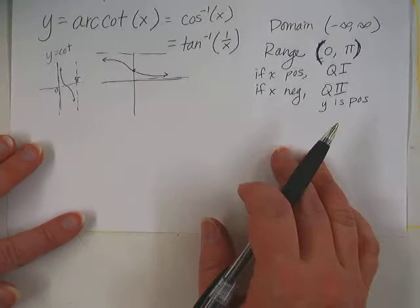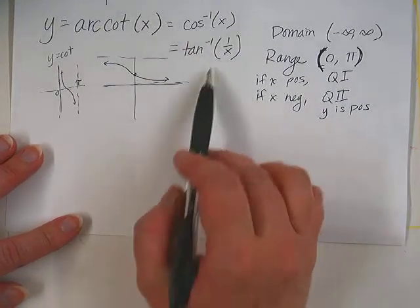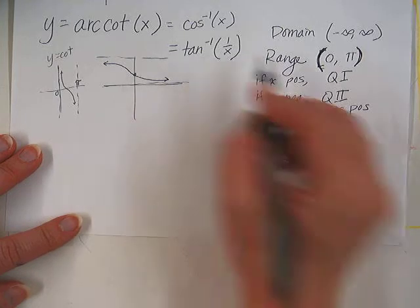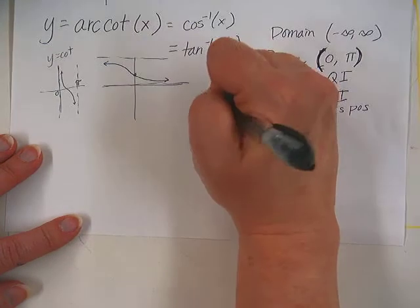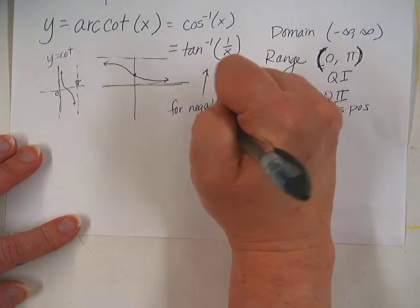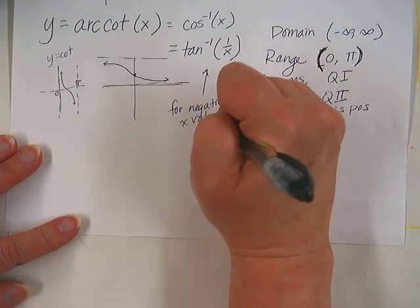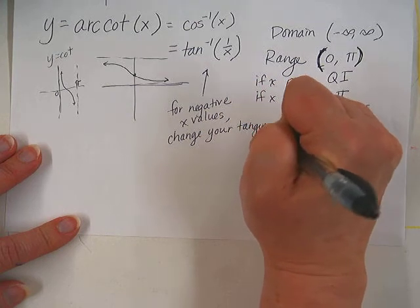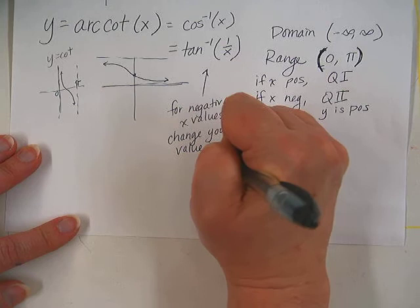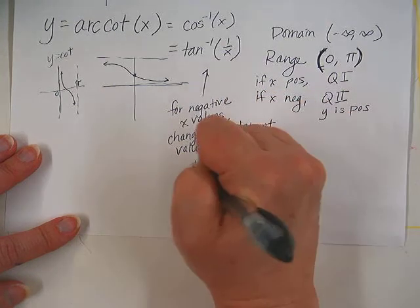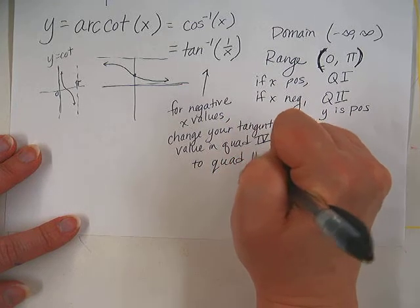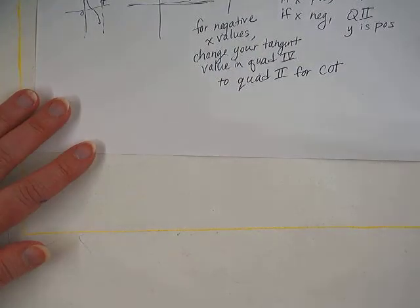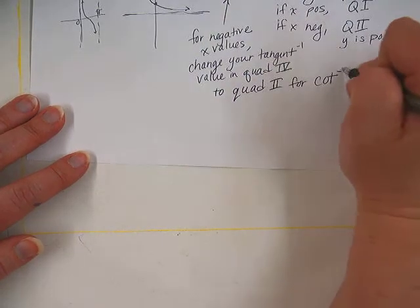So now what I was saying earlier about making sure that your tangent angle, if you use a calculator, ends up in the right place, your calculator is going to give you a quadrant 4 angle for tangent. So then you have to change it to a quadrant 2 angle. So for negative x values, change your tangent value in quadrant 4 to quadrant 2 instead. Both places we're talking about those inverses, right?